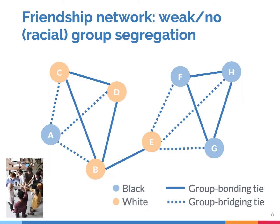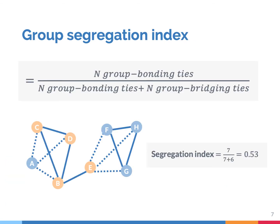Now consider the same networks again. There are still two communities, two friendship cliques, but segregation by race is close to nonexisting. Consider the segregation index again: there are seven group bonding ties and 13 ties in total, so the group segregation index is 0.53. That means there are just slightly more group bonding ties than group bridging ties — it's close to 50-50, meaning no segregation.